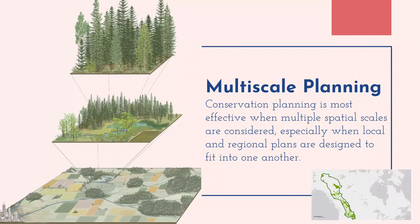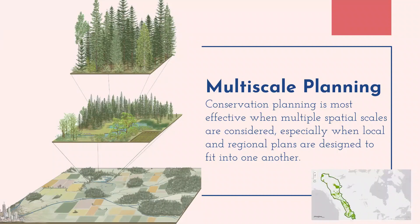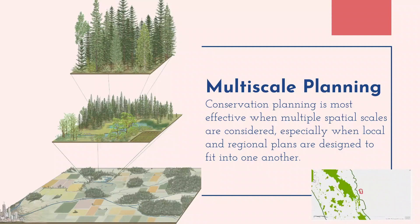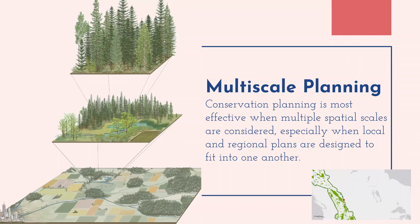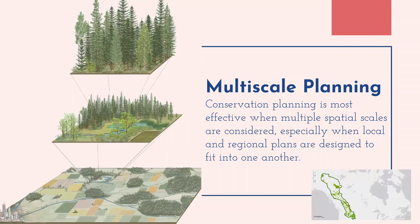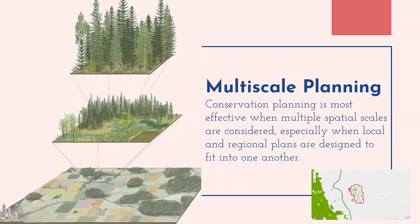Broad scale planning tends to treat urban areas as homogeneous with very little conservation value. There is no single perfect spatial scale in ecology and conservation, as each scale will tell us a different story and help answer different questions. Conservation planning needs to occur on multiple scales, and the most effective planning occurs when plans at different scales are designed to fit into one another. Effective urban biodiversity conservation planning should fill gaps in regional scale planning and help make connections across cities between key areas of regional importance.